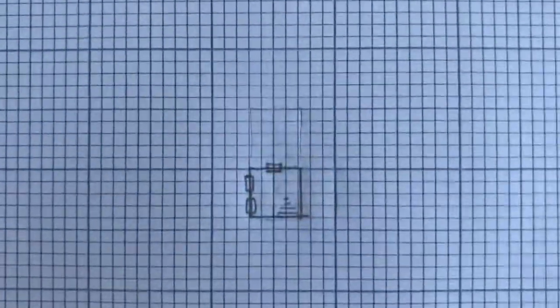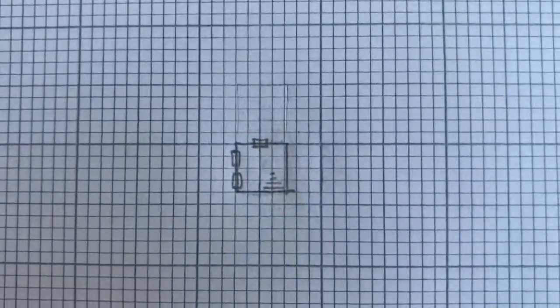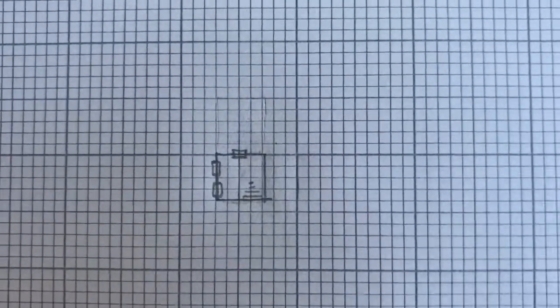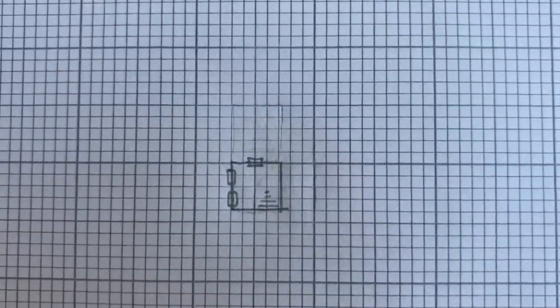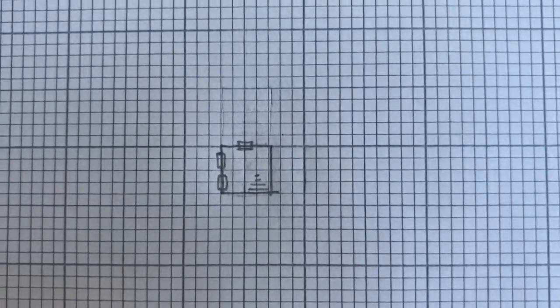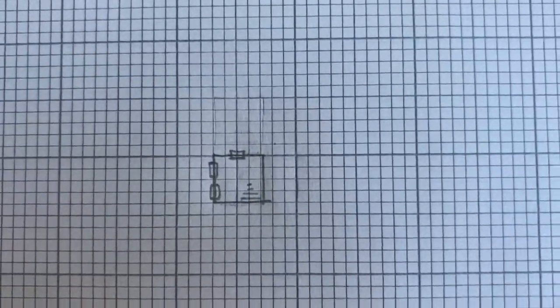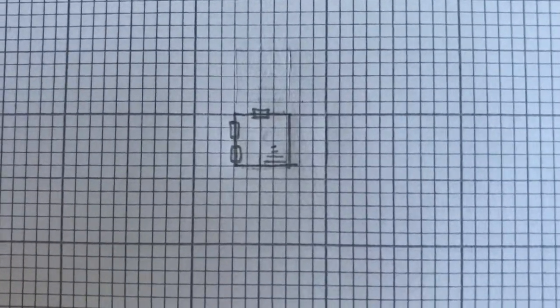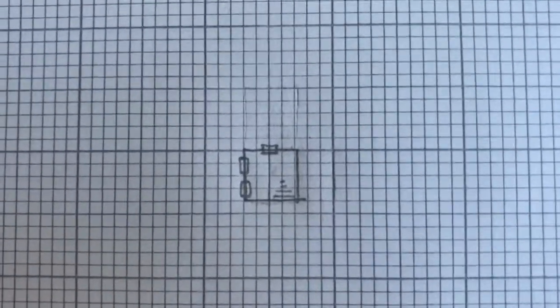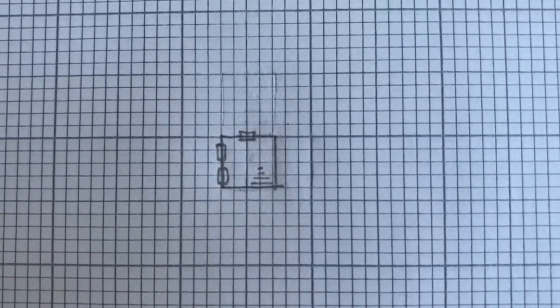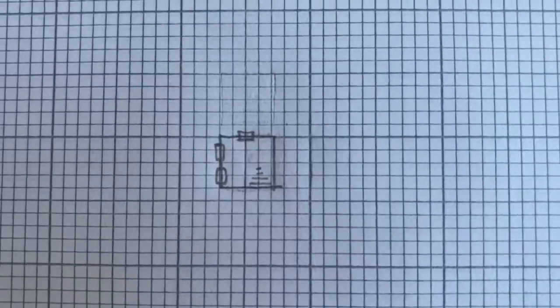So there we have it, we've got our first room of the dungeon. We descend down the steps into a 20 foot by 20 foot square room. We can see a door opposite the way we came in and two doors on the left wall, and in the room we can see gold glittering - 250 gold pieces.